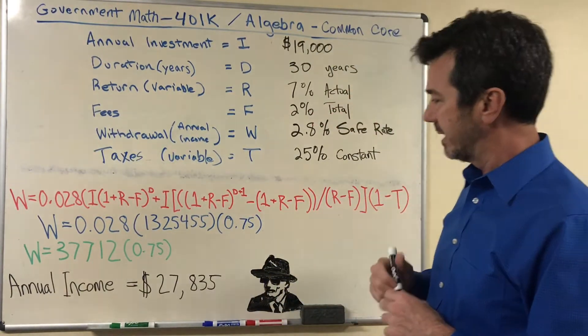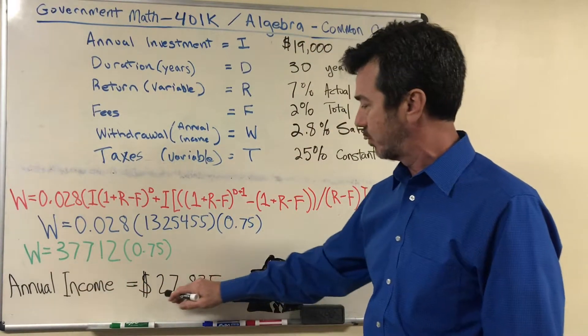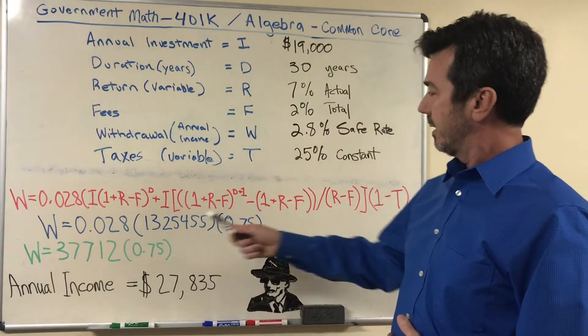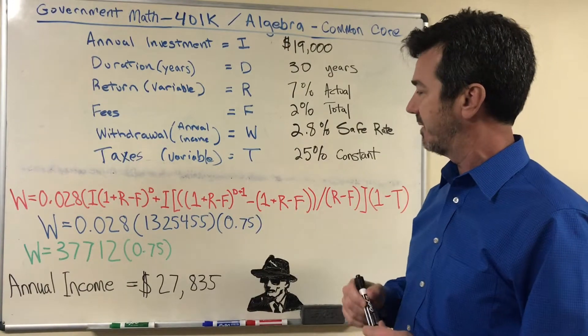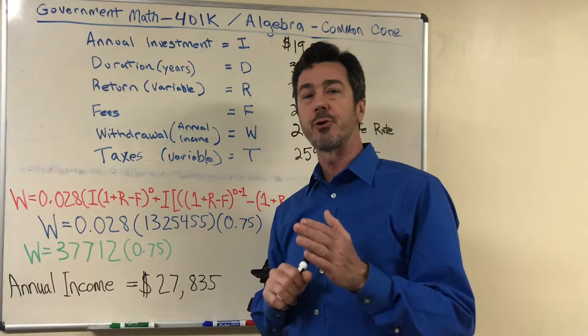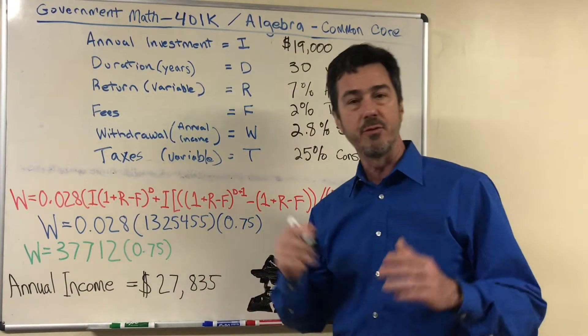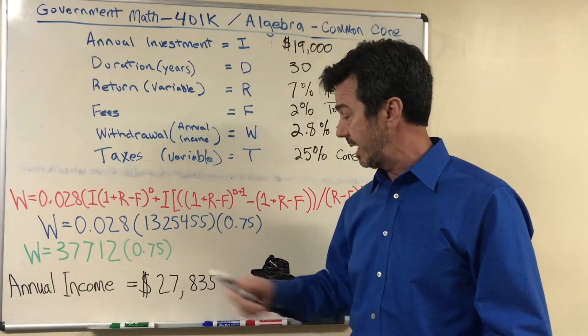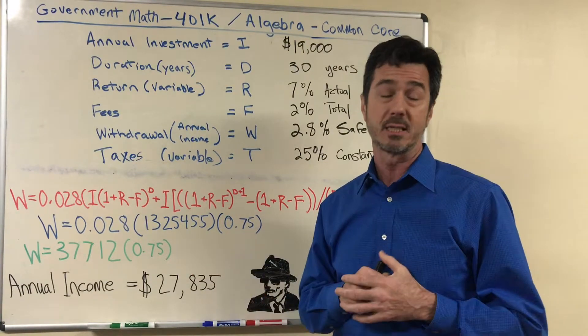As we look at this you see that annual income net after taxes would be $27,835 and $1,325,455 is what your $19,000 contribution would have been after 30 years of compounding. So how does that sound for retirement if you were making $200,000 a year pre-retirement and now you're netting $27,000 in retirement? Could you possibly live on that?